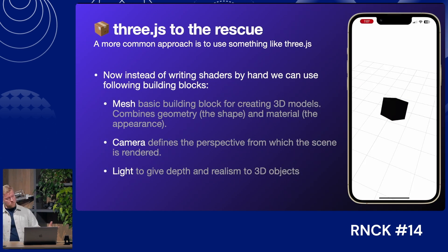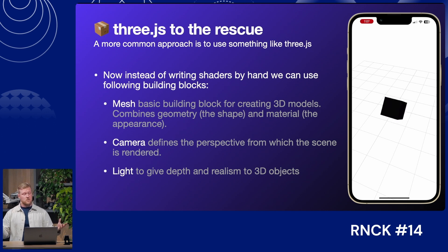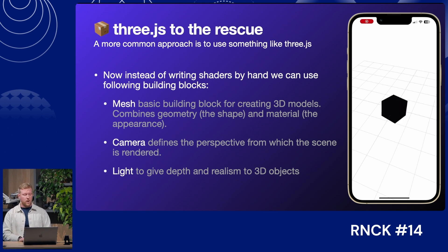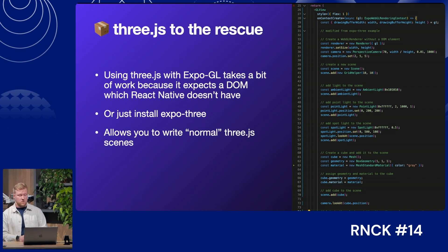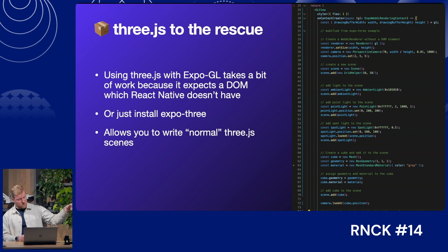Thankfully there's an easier way — Three.js allows you to do things a lot more easily. Instead of writing shaders you use building blocks: a mesh, which is the box in this case, combining the shape of the box with a material. There's a camera you can control and put in a certain perspective, and light to give it realism. You can quite easily install the Expo Three package, which comes with basically everything you need, and then start writing normal Three.js scenes — adding a scene, ambient light, camera, spotlight, and the cube with its material.